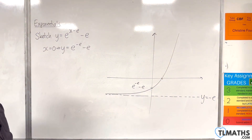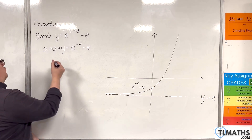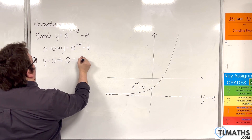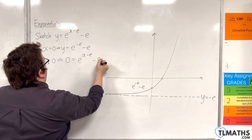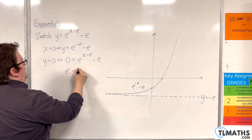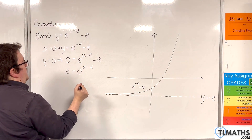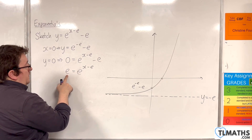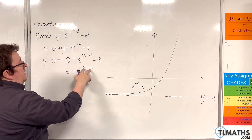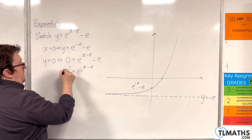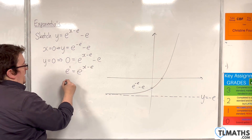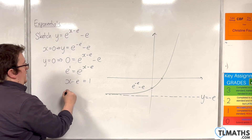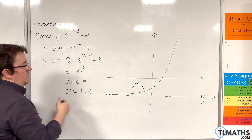Where the curve crosses the x-axis is when y is 0. So when y is 0, we get 0 equals e to the x minus e, take away e. Adding e to both sides gives e to the 1 equals e to the x take away e. For these to be equal, the powers have to be the same, so x take away e equals 1, meaning x equals 1 plus e, or e plus 1. That's where the curve crosses the x-axis.